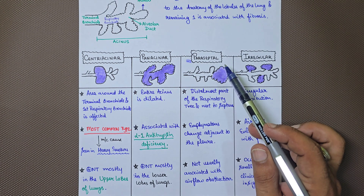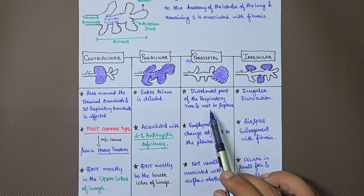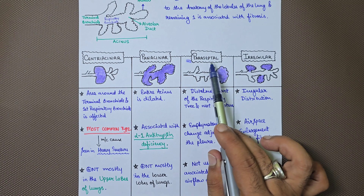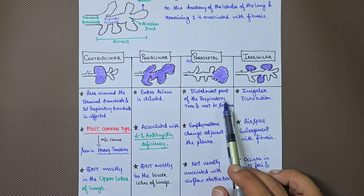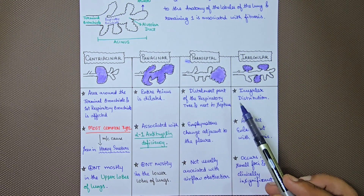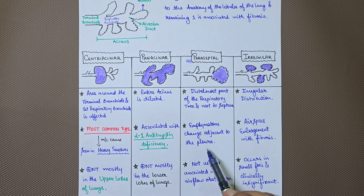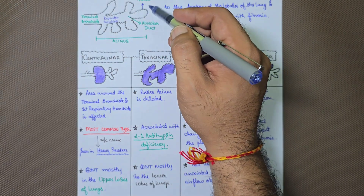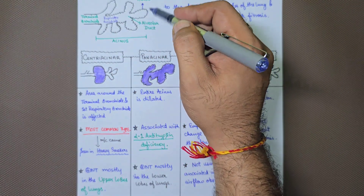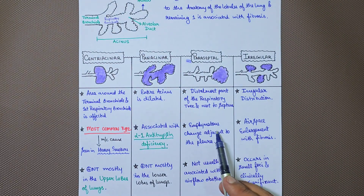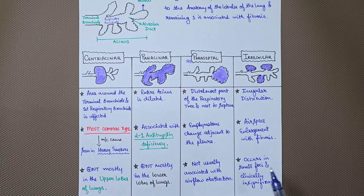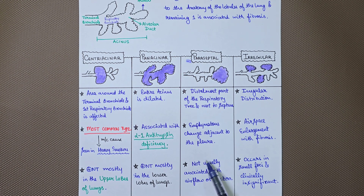The third type is paraseptal emphysema. As the name suggests, the distal part of the respiratory tree next to the septum is affected. Emphysematous change occurs adjacent to the pleura — the last part of the lung before the pleura. It is not usually associated with airflow obstruction, so patients typically don't complain about difficulty breathing.